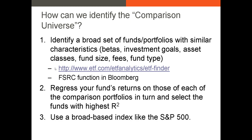There are some other ways to identify the comparison universe. The next best option is to regress your fund's returns on those of each of the comparison portfolios and select the funds that have the highest R-squared. Our R-squared is the explanatory power of our model — the higher the R-squared, the closer it is to one, the greater the extent to which the fund on the right-hand side of our regression explains the variation in returns of our fund on the left-hand side.